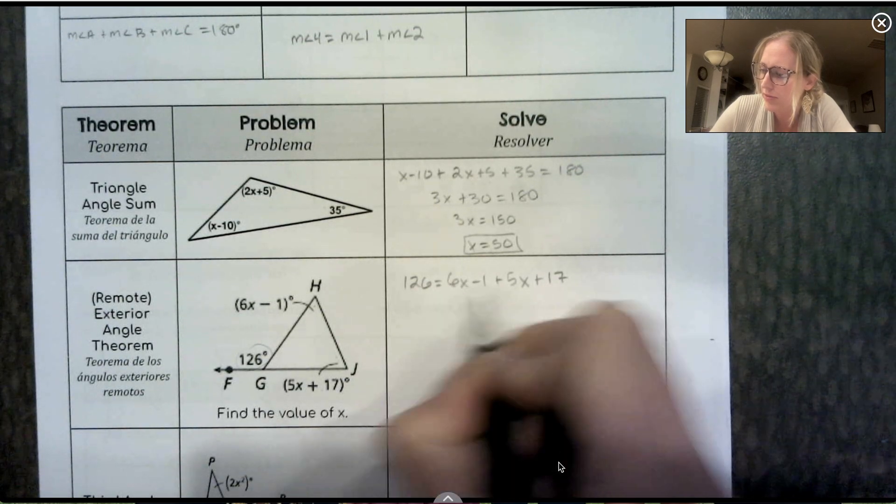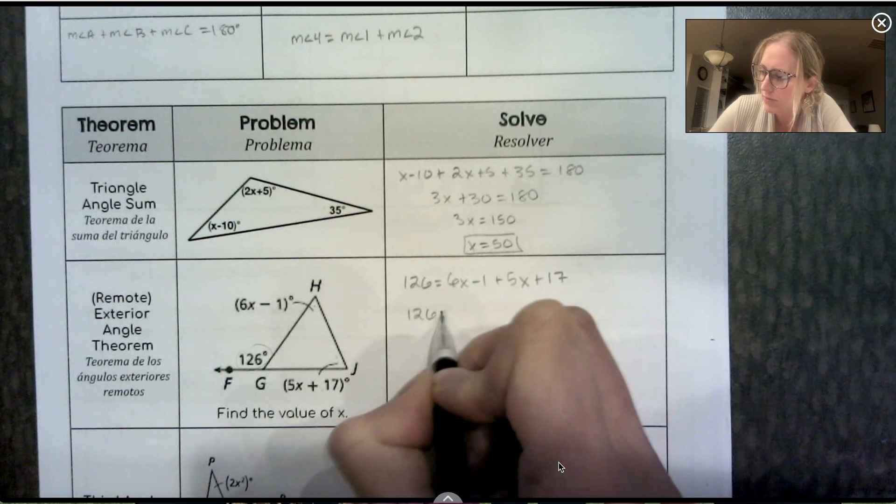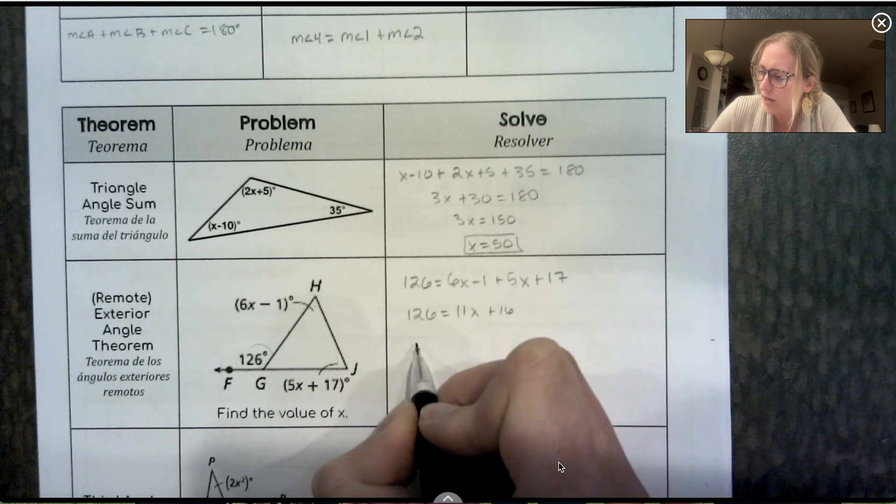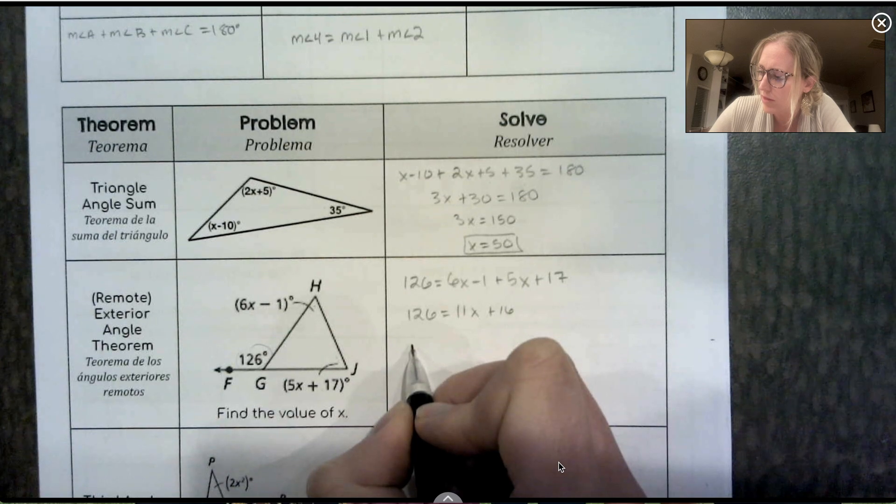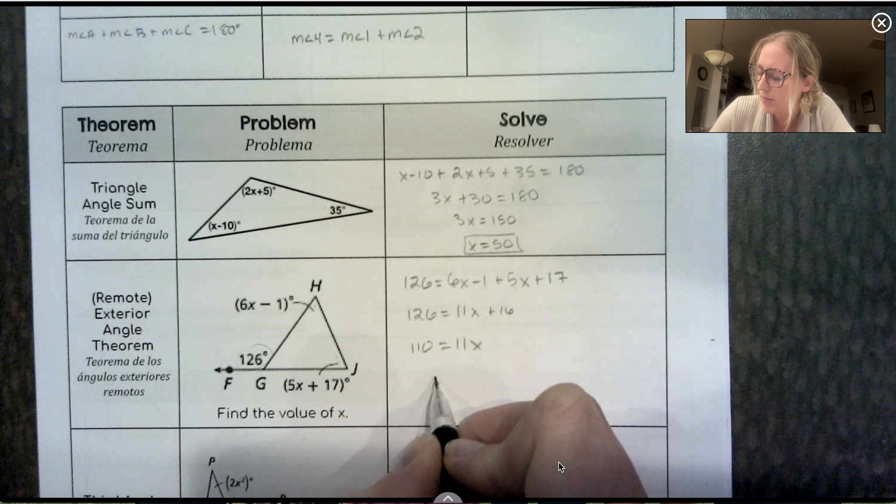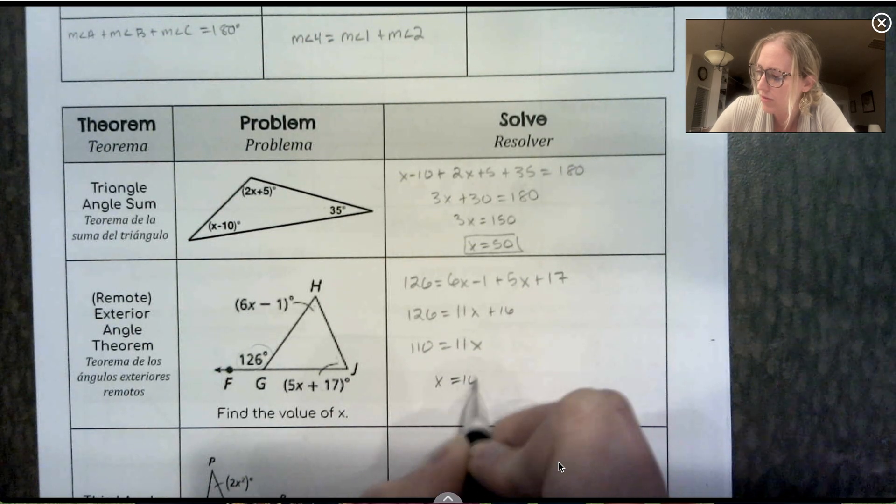Same thing, combine some like terms. So we got 11x plus 16. So I've got minus 16. What do we get there? 110 equals 11x divided by 11 and we get x equals 10.